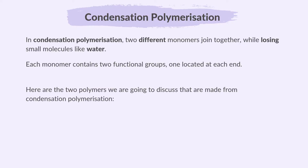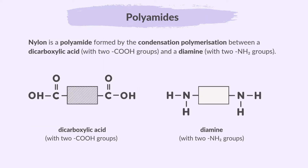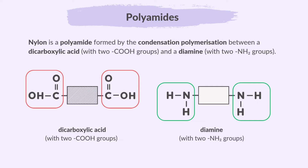Here are the two polymers we are going to discuss that are made from condensation polymerization: polyamides and polyesters. Nylon is a polyamide formed by the condensation polymerization of a dicarboxylic acid with two COOH groups and a diamine with two NH2 groups.